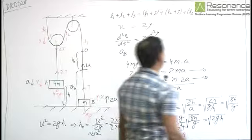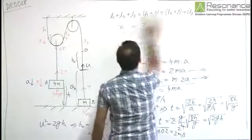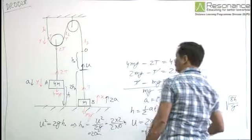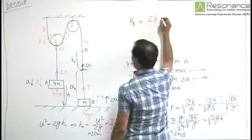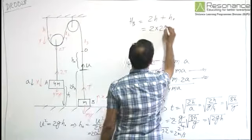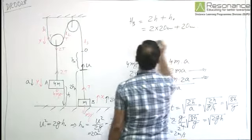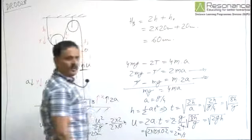Here from we can write h naught is equal to u square by 2g, that is 2 into 2 by 2 into 10 meter, or that is equal to 20 centimeter. So total height raised by B is equal to 2h plus h naught, that is 2 into 20 centimeter plus 20 centimeter, that is equal to 60 centimeter. Maximum height raised by B is 60 centimeter.